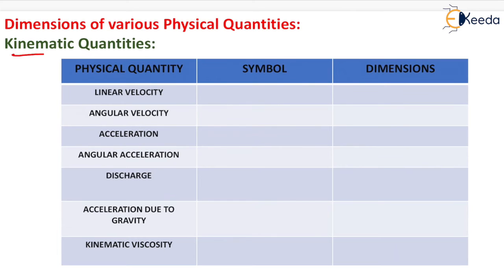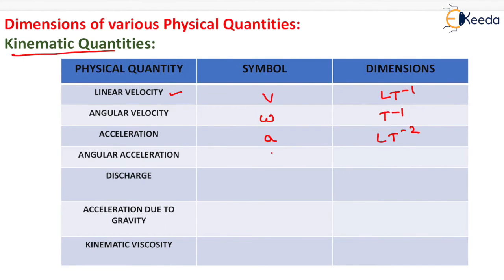For kinematic quantities: linear velocity, symbol v, dimension LT⁻¹; angular velocity, symbol ω (omega), dimension T⁻¹; acceleration, symbol a, dimension LT⁻²; angular acceleration, symbol α (alpha), dimension T⁻²; and discharge, symbol Q, dimension L³T⁻¹.